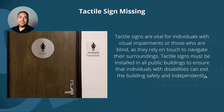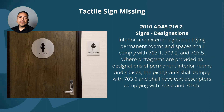Tactile signs — missing tactile signs are vital for individuals with visual impairments or those who are blind, as they rely on touch to navigate their surroundings. Tactile signs must be installed in all public buildings to ensure that individuals with disabilities can exit the building safely and independently.